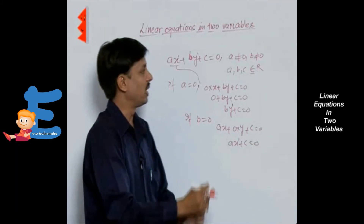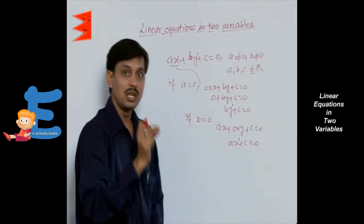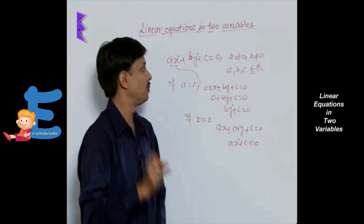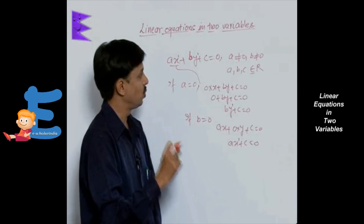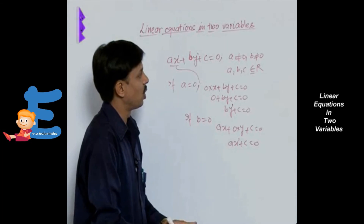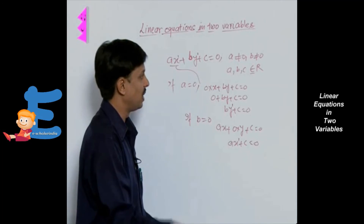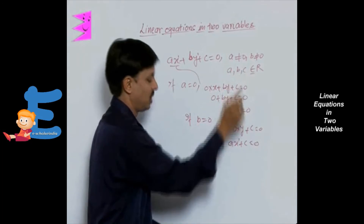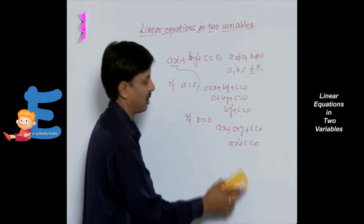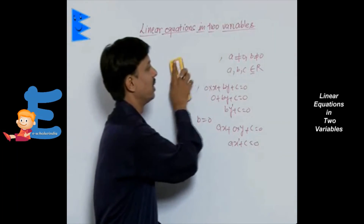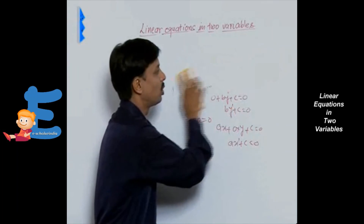That is why we say any equation of the form AX plus BY plus C equals 0, where A is not equal to 0, B is not equal to 0, and A, B, C are real numbers — such an equation is known as the linear equation in two variables.